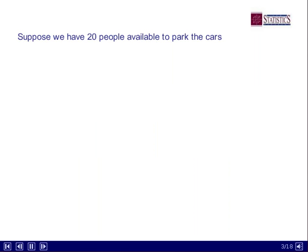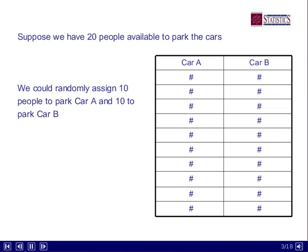Let's start with: there are 20 people available to park the cars. The question is how are we going to use these 20 people? Well, one approach would be to take 10 of those at random and assign them to car A, and whatever ones are left over, they're going to park car B. Collect the data. We've got a column for A, a column for B. We can get the two means — two sample means — and use those to perform some sort of test.